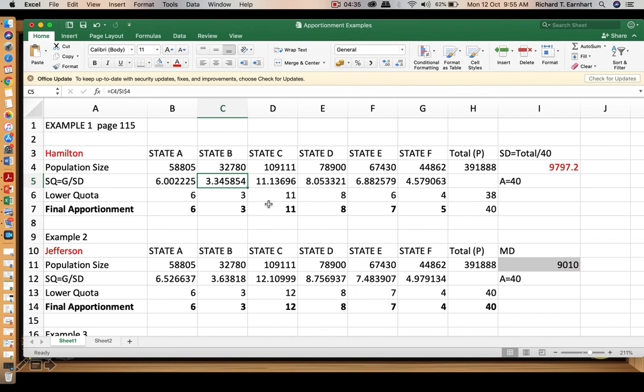And then we round down, select, and then the second parameter will be 0. You may move the cursor to the right to copy the formula. And then you may take the sum, so you can check the total for lower quota. In this case, we have 38.